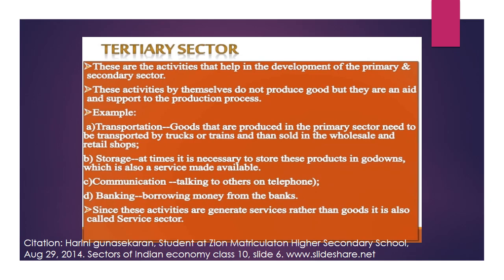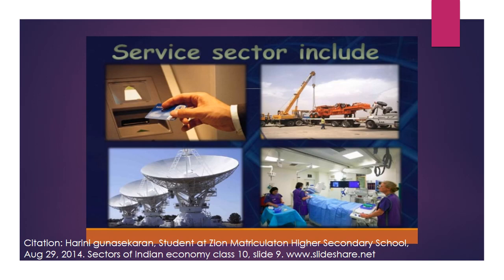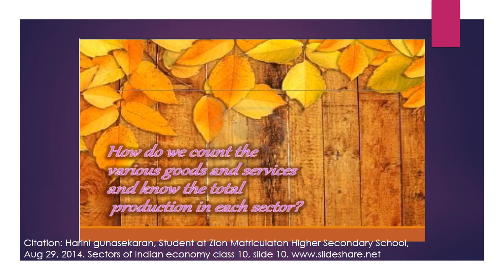To summarize: the primary sector uses natural products directly — main examples are agriculture and mining. The secondary sector uses agricultural products with machinery and converts them into new things — example: cotton to cloth. The tertiary sector provides services to both the primary and secondary sectors and does not produce any goods. Examples include ATM services, transportation, communication, and hospitals.